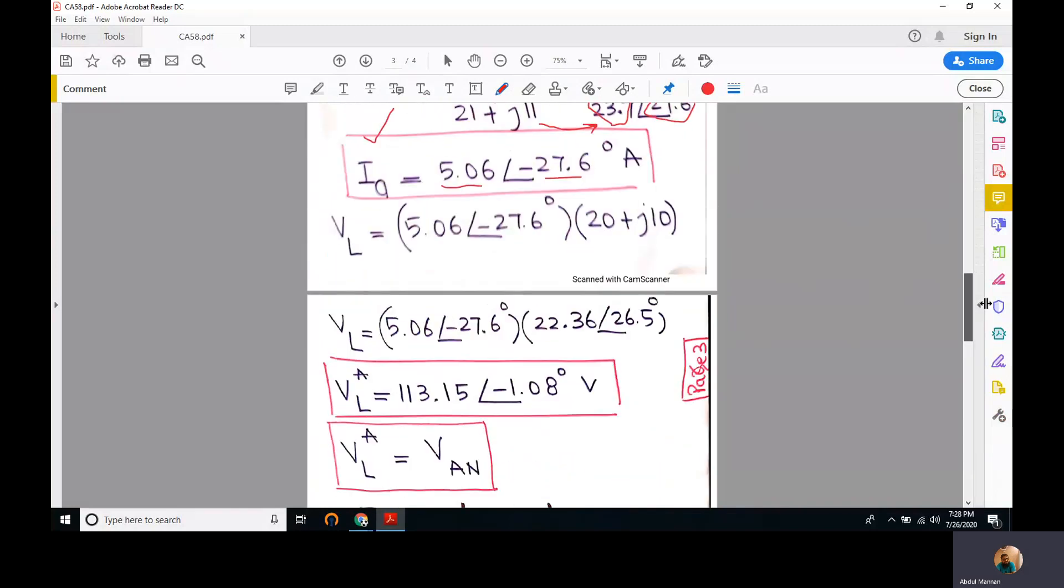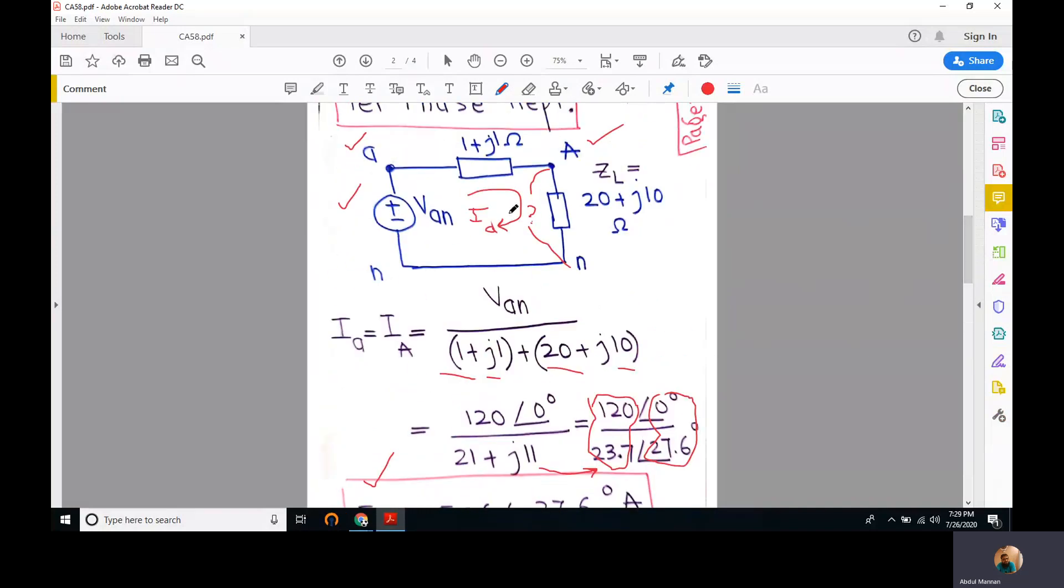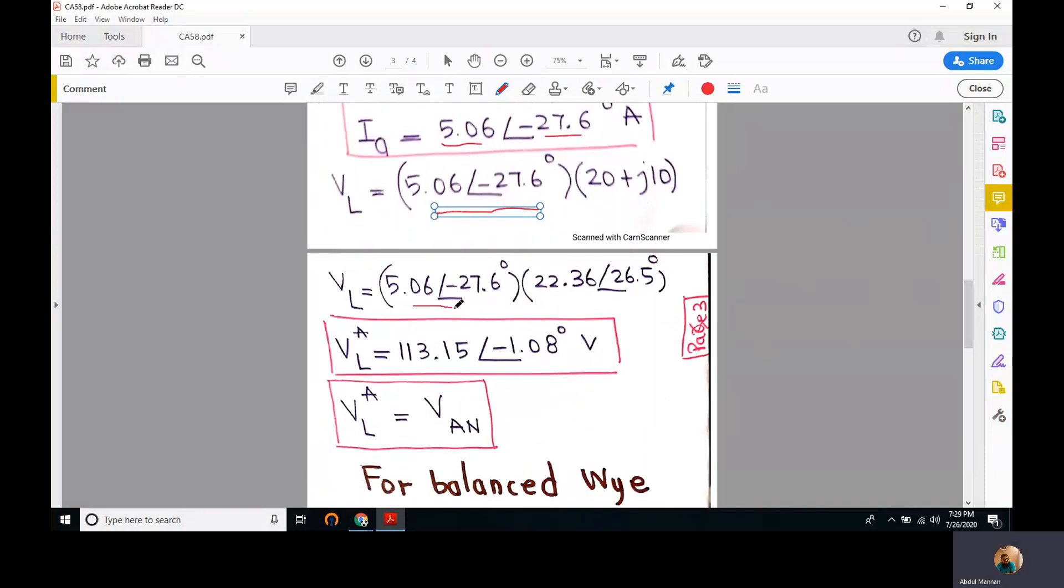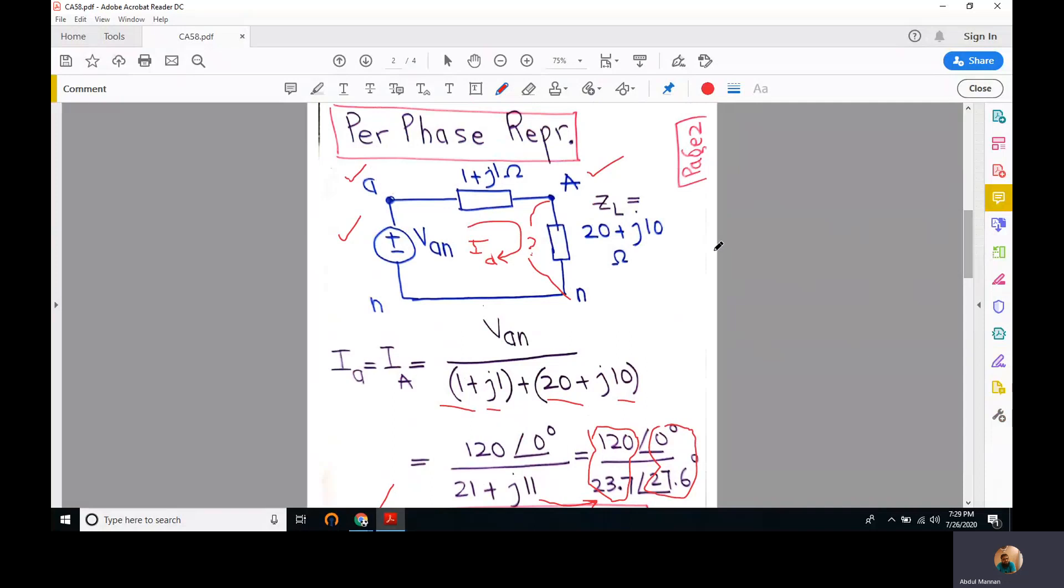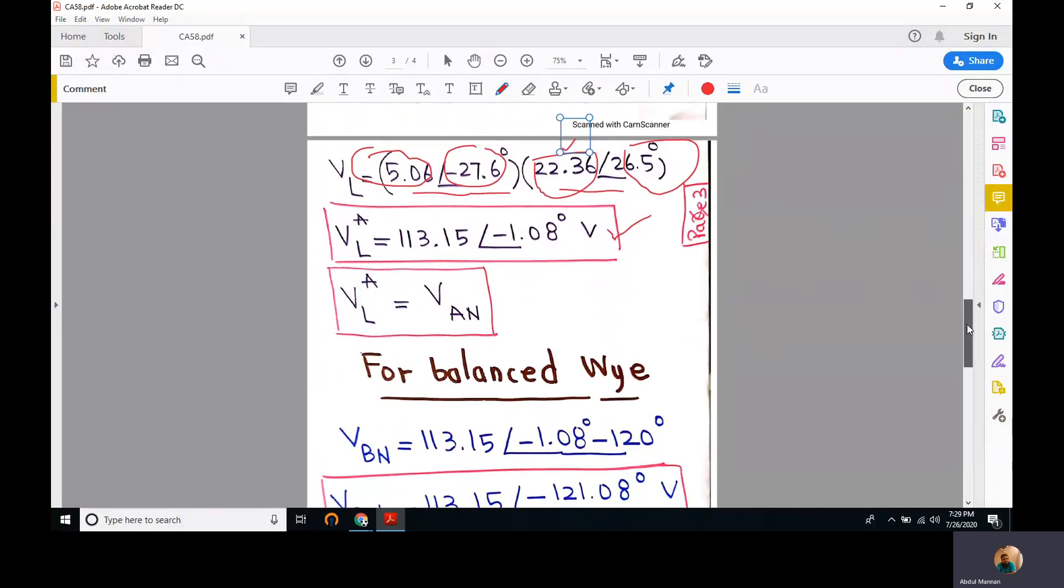This can be computed by using Ohm's law, the current flowing through it, because it's a series circuit and we have only one current flowing through the line impedance and the load impedance. The current multiplied by the impedance, which is 20 plus j10. We can convert this into a polar number, 22.36 at an angle of 26.5 degrees. When we multiply these polar numbers, we multiply their magnitudes and add their angles. We come up with this value: 113.15 at an angle of minus 1 degree. This Vl in phase A can also be written as V sub capital A capital N.